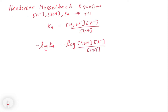On the left side, taking the negative log of Ka gives us the pKa. On the right side, we can apply log rules. We can separate out the negative log of the concentration of H₃O⁺ from the A minus and HA terms. Because things that are multiplied together can be separated into addition, we get: log of H₃O⁺ plus the log of A minus over HA.